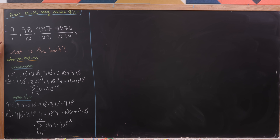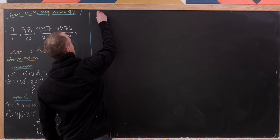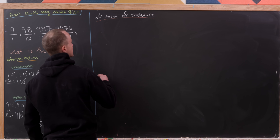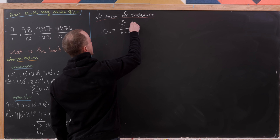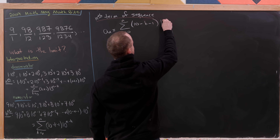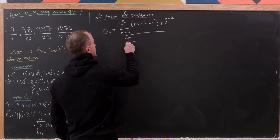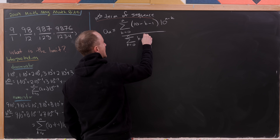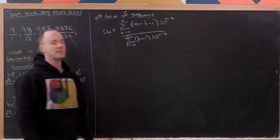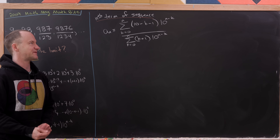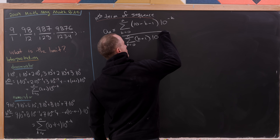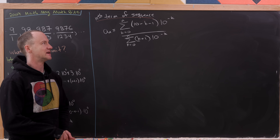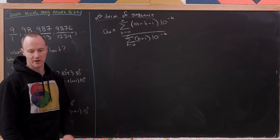So the nth term a sub n of our original sequence equals the sum as k goes from 0 to n of 10 minus k minus 1 times 10 to the n minus k, over the sum as k goes from 0 to n of k plus 1 times 10 to the n minus k. One thing we can do immediately is factor 10 to the n out of both the numerator and the denominator, which just erases the n's in the exponent, leaving 10 to the minus k in both sums.